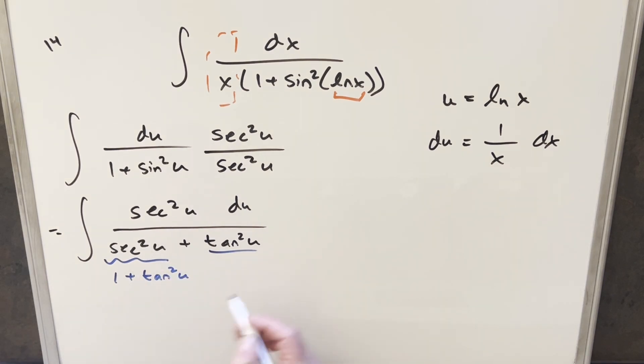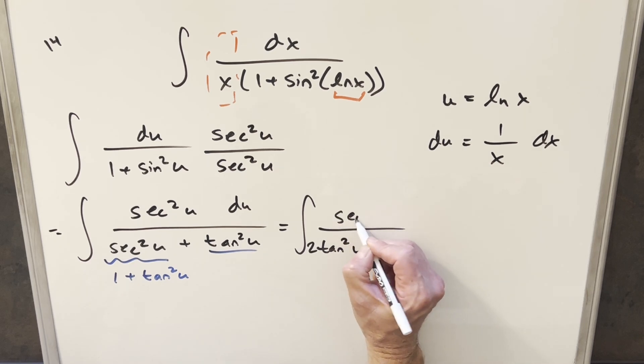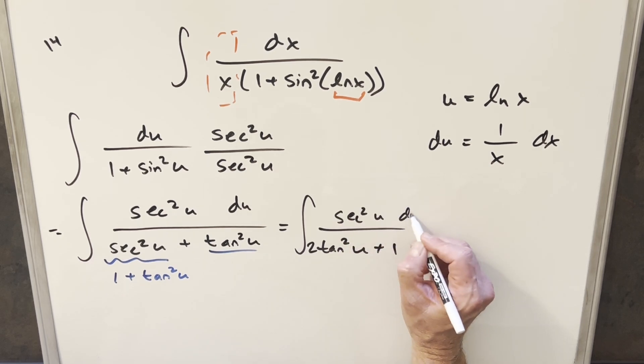And so before I substitute, I can add up the denominator and just kind of rewrite this. So what's going to happen is this is going to become 2 tan squared u plus 1. And then we still have this secant squared in the numerator.